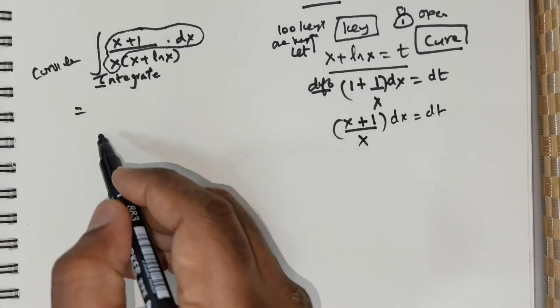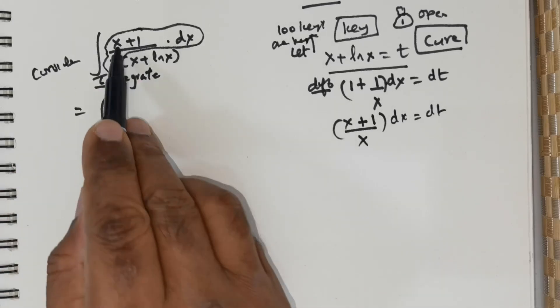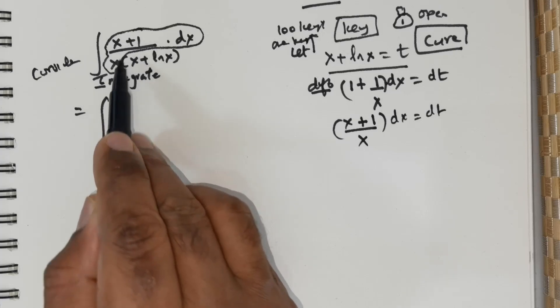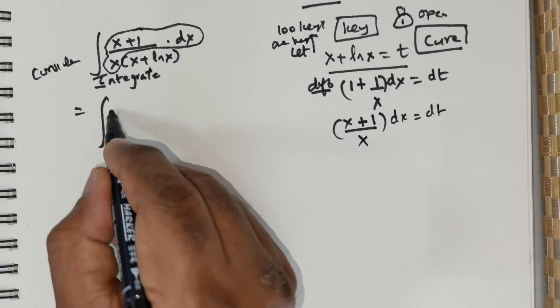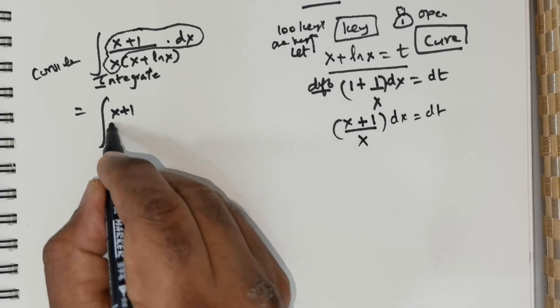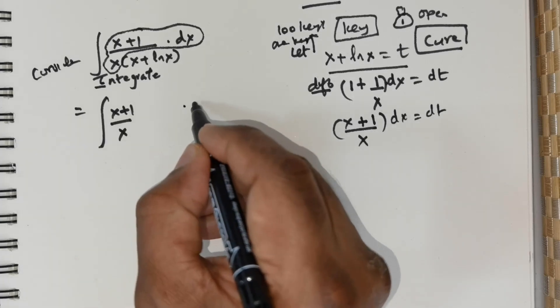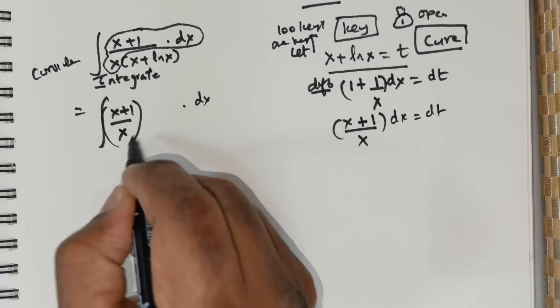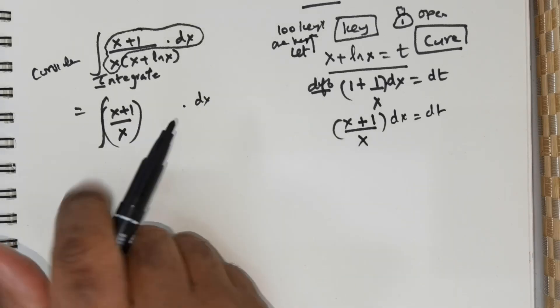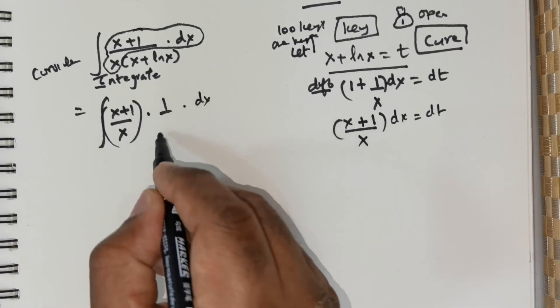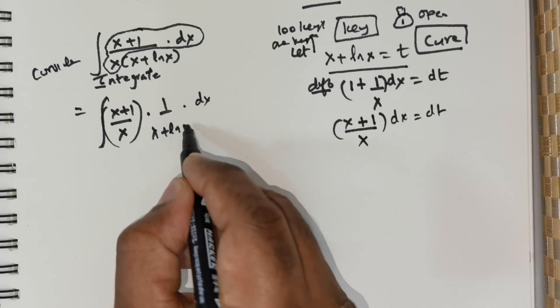So if I were to start off like this, consider this which is equal to integral (x + 1/x)dx. Let me rewrite this: (x + 1/x)dx. Right, this is already there, and multiplied with 1/(x + ln x).